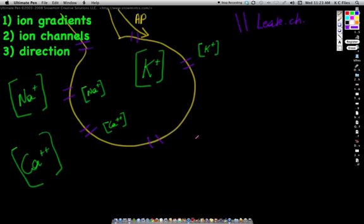If we now indicate the direction of movement through these leakage channels for each one of our ions, then we see that sodium will pass through these leakage channels along its concentration gradient, so into our cell. Similar principle for calcium.